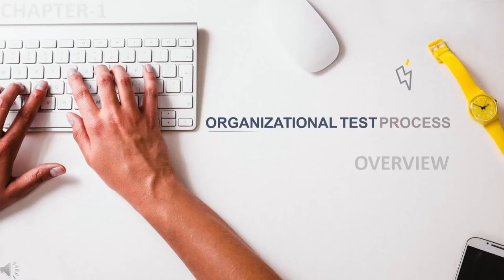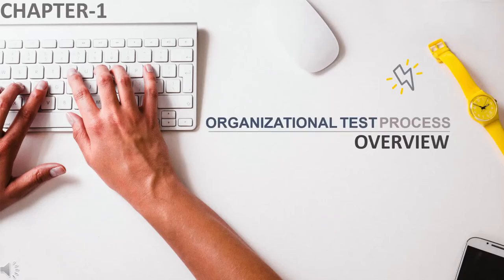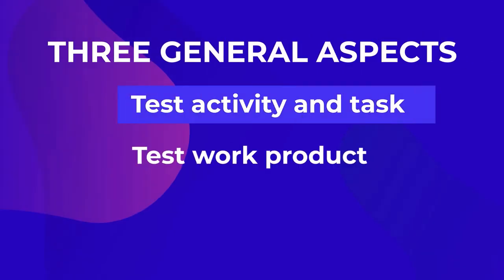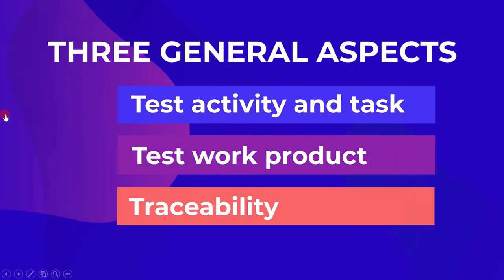Before we start with the test process, let's have an overview of what we will be seeing in the upcoming videos. There are three general aspects of organizational test processes. The first aspect is test activity and task. The second aspect is the test work product. The third aspect is traceability. Let's understand what they mean.